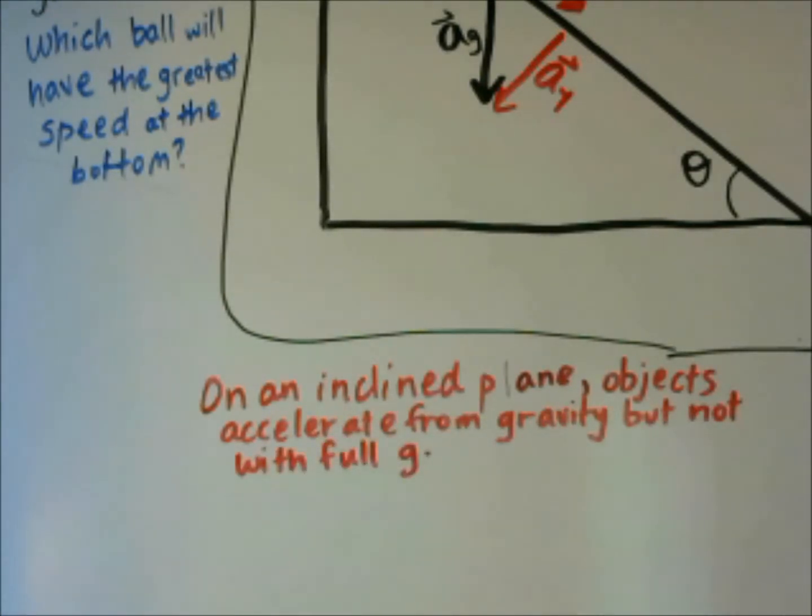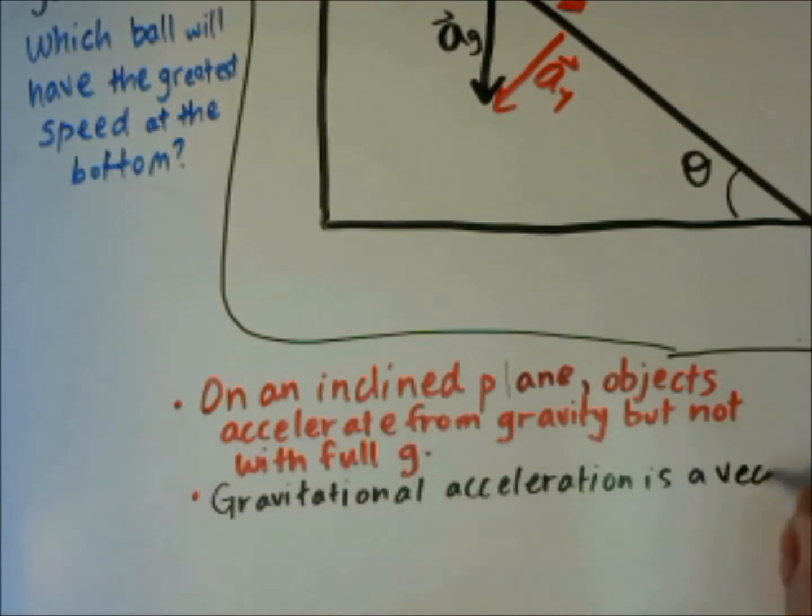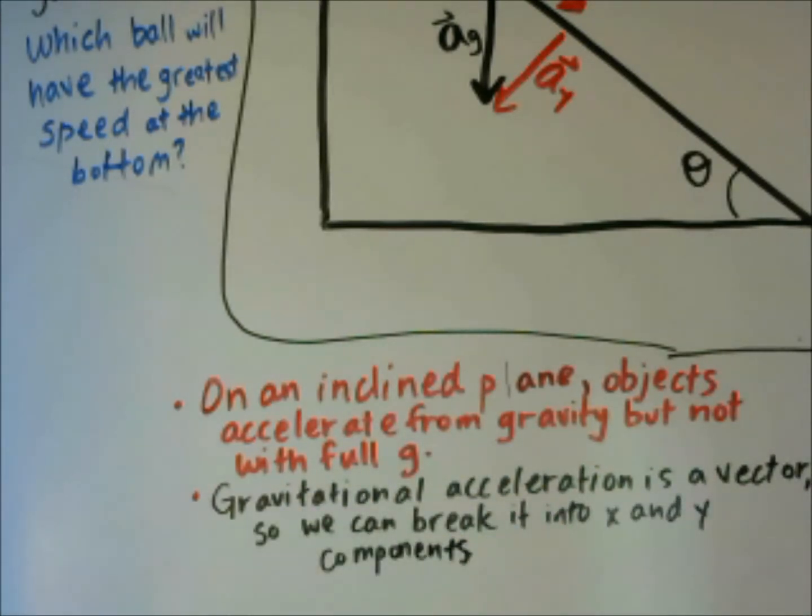First, on an inclined plane, objects will accelerate from gravity, but not with the full amount of g, or negative 9.8. Gravitational acceleration is a vector, so we can break it into the x and y components.